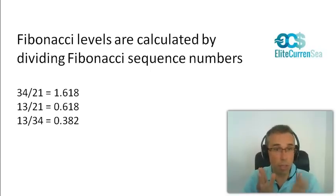Here are some examples. Three examples. 34 divided by 21 is 1.618, 13 divided by 21 is 0.618, and basically any time you divide these numbers, these Fibonacci sequence numbers with each other, you'll get ratios that are basically more or less the same. 13 divided by 21 is the same actually as 55 divided by 89. Try it out yourself, and you should see that those are the same levels.